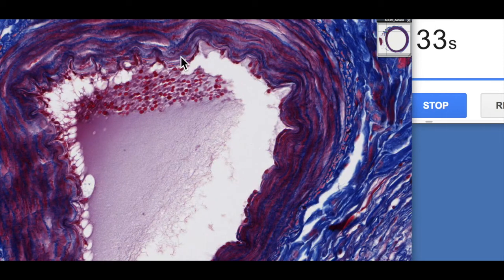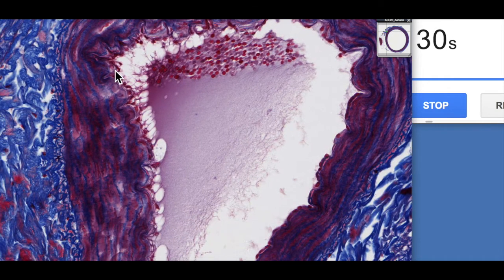It's very characteristic, and what it often does is it causes this waviness to the tunica intima. You get this sort of waviness. It's a really good indication that you're actually looking at a muscular artery as opposed to an elastic artery or a vein.